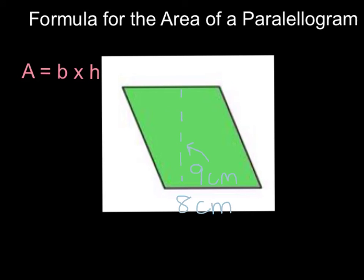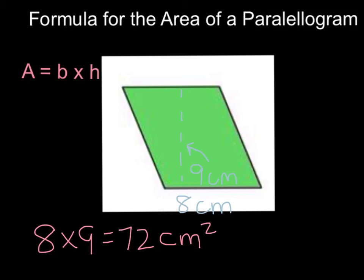Here we are going to learn the formula for the area of a parallelogram. The formula is area equals base times height. This formula is very similar to that of a rectangle, because a rectangle and a parallelogram are very similar figures — they both have four sides, but instead of all right angles, a parallelogram has both obtuse and acute angles. The base of this parallelogram is 8 centimeters and the height is 9 centimeters, so we multiply 8 times 9, which equals 72 centimeters squared.